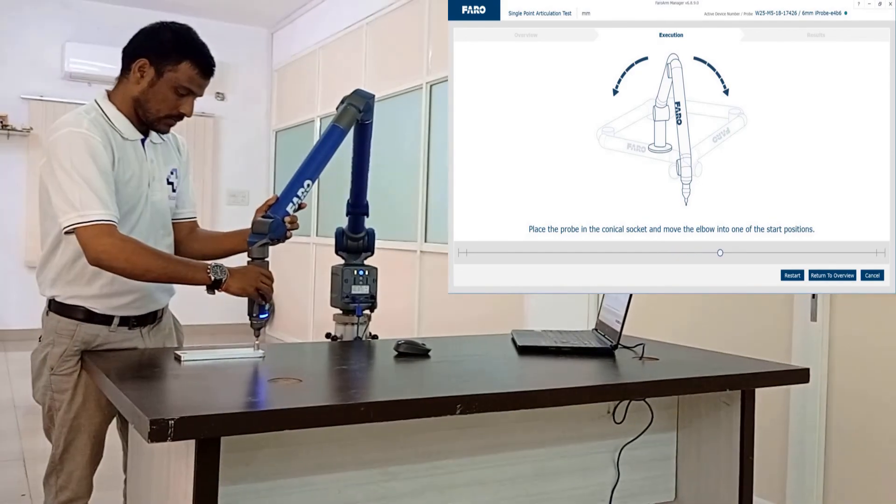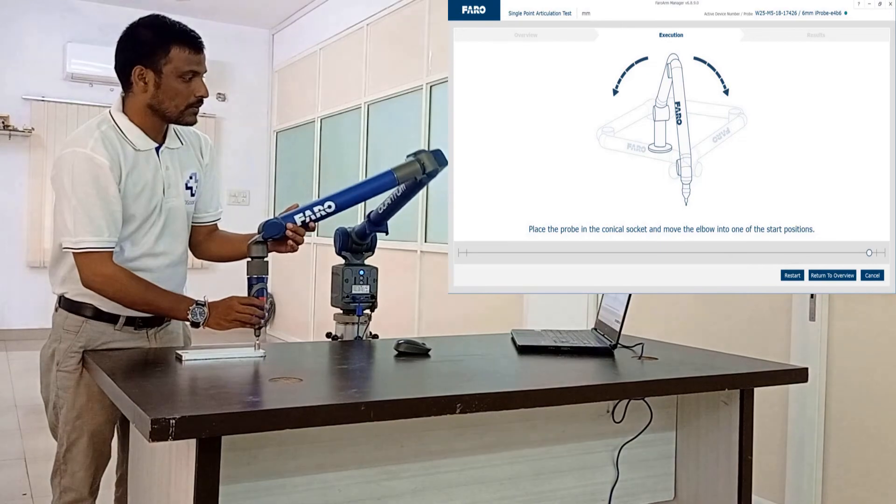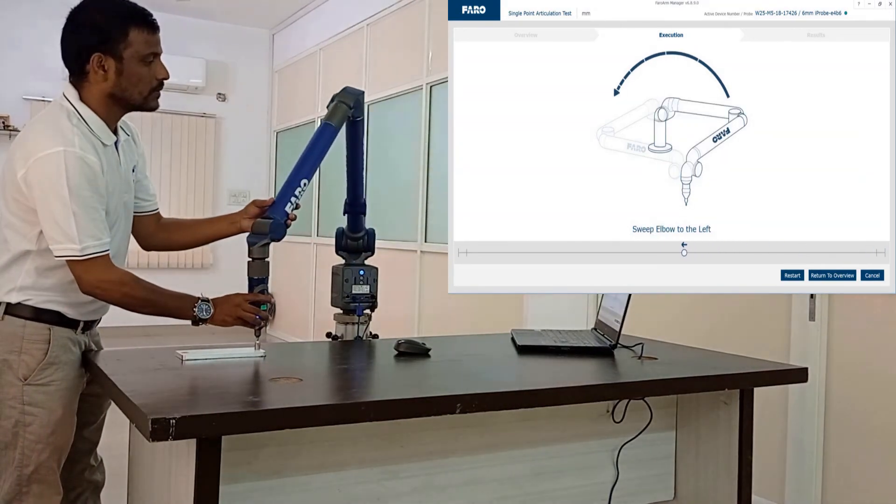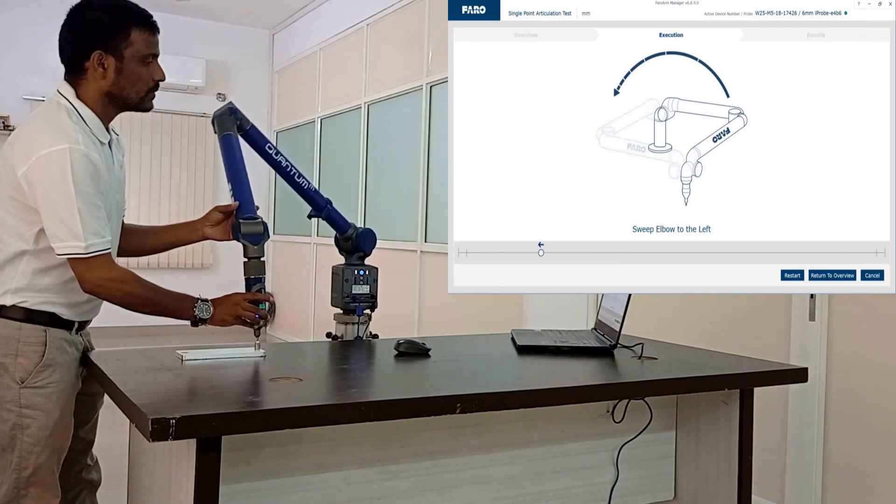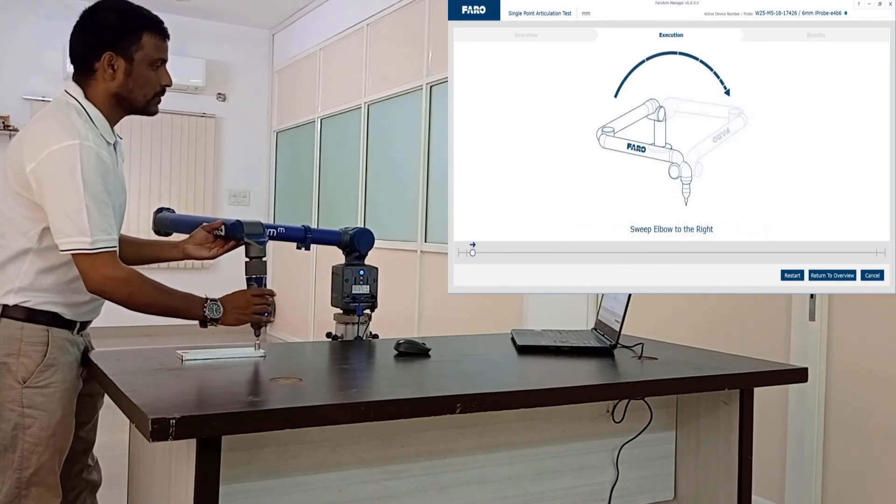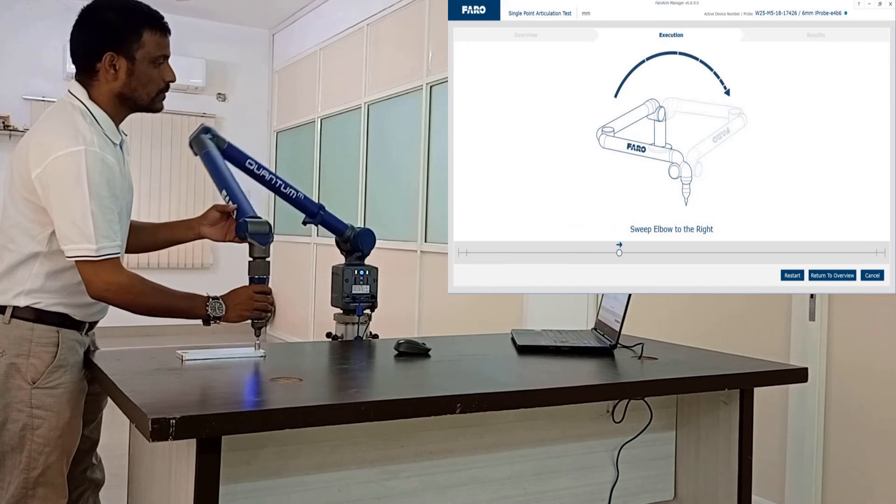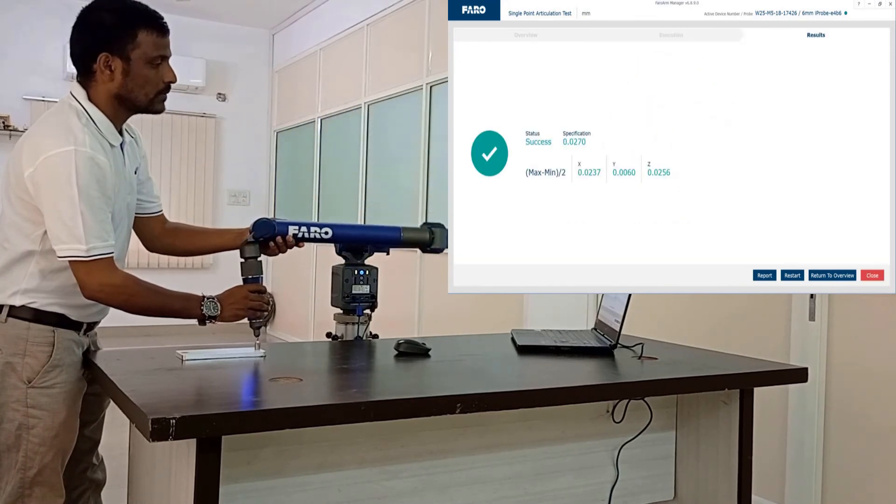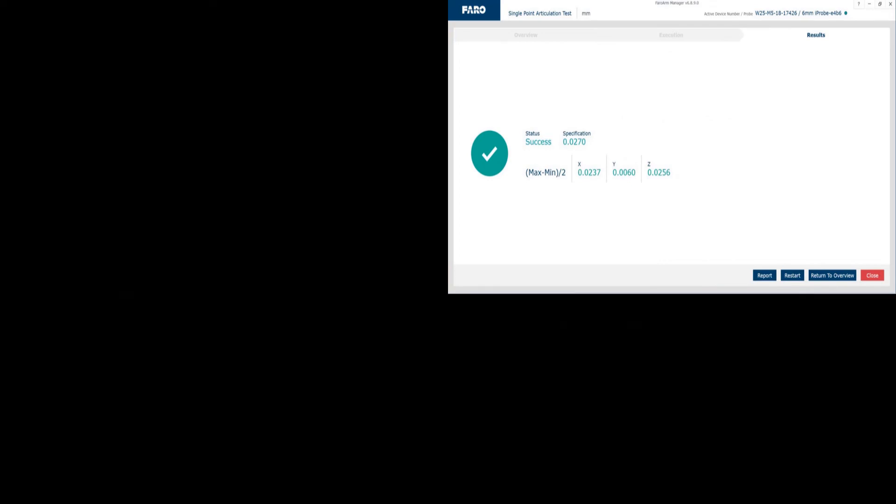Move the elbow to one of the ends and press the green button. Sweep the elbow to the opposite end. Rotate the probe 180 degrees. Sweep the elbow back. Repeat the steps if success is not achieved.